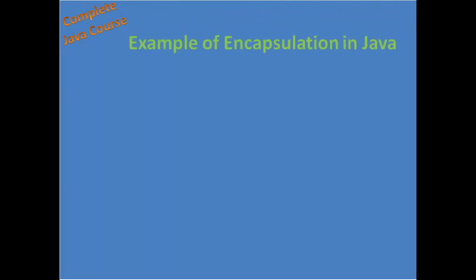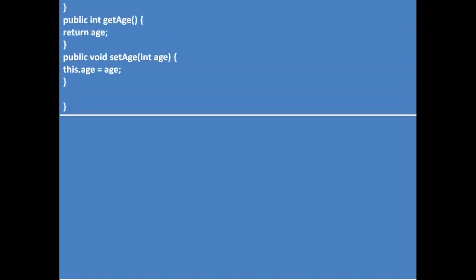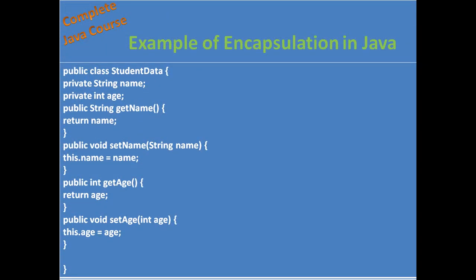Now, an example of encapsulation in Java. Encapsulation can be considered an advanced form of a class. Why? Because in a regular class we define variables, methods, and a constructor — but in an encapsulated class we define variables using the private access modifier.